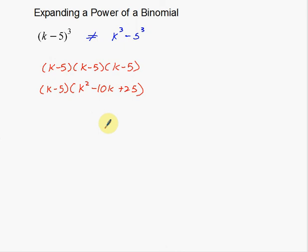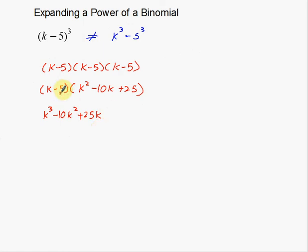Now, just like the last problem, I'm going to take K times everything first, then negative 5 times everything. K times the trinomial gives K to the third, minus 10K squared, and 25K — all the K exponents increase by one. Then multiplying by negative 5: negative 5 times K squared is negative 5K squared, negative 5 times negative 10K is positive 50K, and negative 5 times 25 is negative 125.